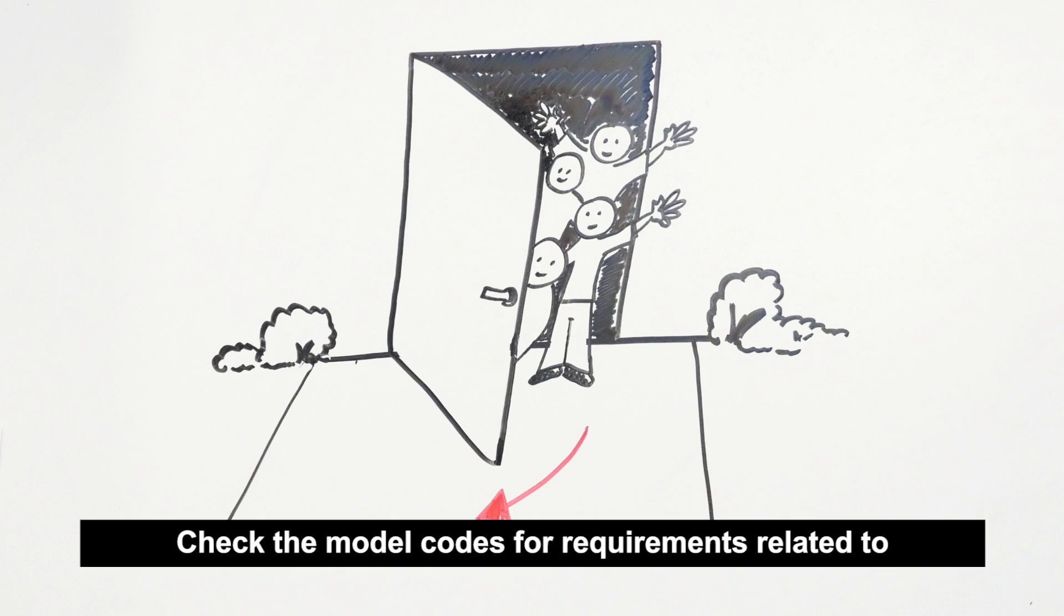Check the model codes for requirements related to other types of doors, such as horizontal or vertical sliding doors and grills, and revolving doors.